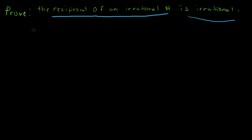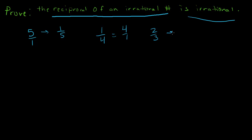So let's first look at what is a reciprocal. For example, if I have the number 5, then its reciprocal would be 1 over 5, because 5 can be expressed as 5 over 1. So if we basically flip that fraction, we get 1 over 5. Or, for example, 1 over 4 — the reciprocal would be 4 over 1. Or 2 thirds — the reciprocal of 2 thirds would be 3 over 2. So it's basically when we flip the fraction: the numerator becomes the denominator, the denominator becomes the numerator.